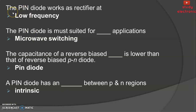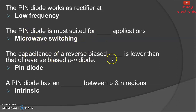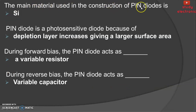Objective questions: The PIN diode blocks the rectifier at low frequency — at low frequency, the PIN diode acts like a rectifier. The PIN diode is most suitable for microwave switch applications. The PIN diode is mainly used for microwave switching. The capacitance of a reverse bias PIN diode is lower than that of a reverse bias PN diode. The PIN diode has an intrinsic layer between P and N regions. The main material used in the construction of a PIN diode is silicon. The PIN diode is a photosensitive diode because the depletion layer increases, giving a large surface area.